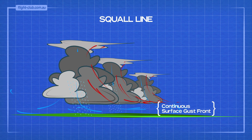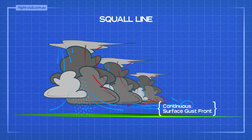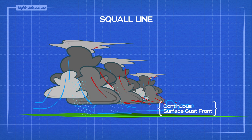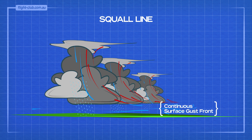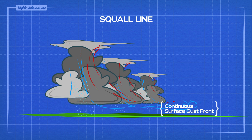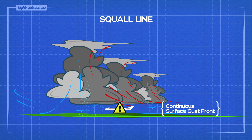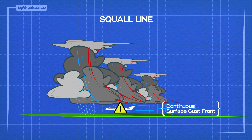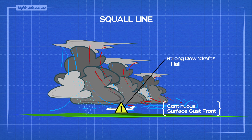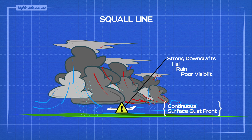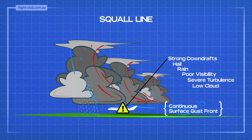Squall lines are dangerous to aeroplanes in flight since they present a wall of severe weather which is too wide, too high and too long to negotiate. Flying beneath the cloud is very dangerous due to the high probability of encountering strong downdrafts, hail, rain, poor visibility, severe turbulence and low cloud.